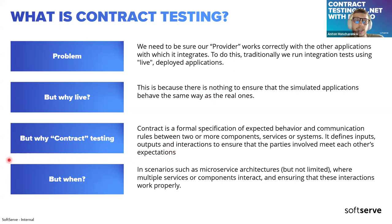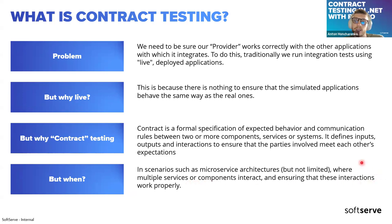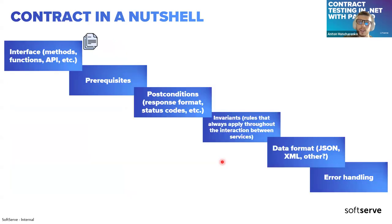When do we actually need contract testing? The most popular scenarios are when you have microservice architectures, but it's not limited to that. It can be straightforward communication between front end and back end if you have two different applications with completely separate teams. In general, it is applicable when multiple services or components interact with each other and we need to ensure that these interactions work properly.